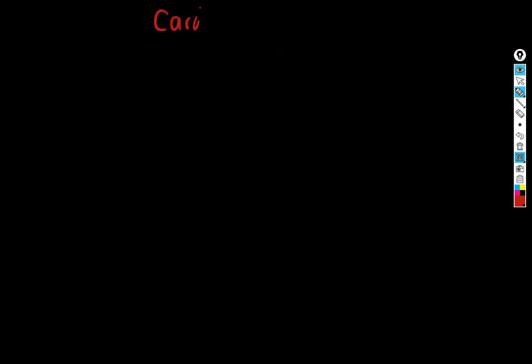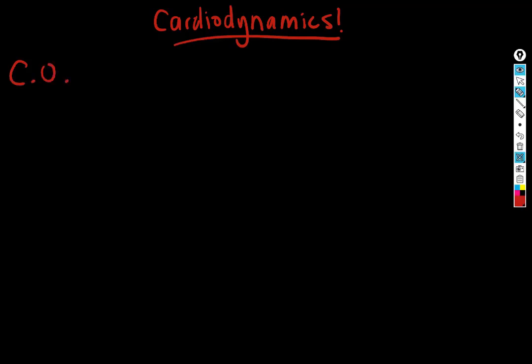Hi everyone, Professor Howard here. We're going to dive right into cardiodynamics. Cardiodynamics is basically a way to look at how much blood the heart is moving per unit time. That is an estimate of heart health — how efficiently and how hard the heart is working at any given time. The basic unit of cardiodynamics is cardiac output.